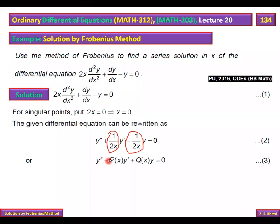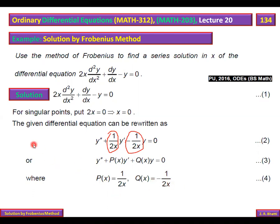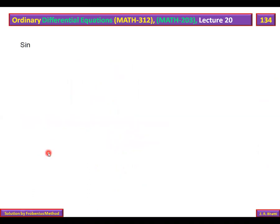Rewriting the equation in standard form: y'' + P(x)y' + Q(x)y = 0, where P(x) = 1/(2x) and Q(x) = −1/(2x). Multiplying P(x) by x gives x · (1/2x) = 1/2, which is differentiable and analytic.